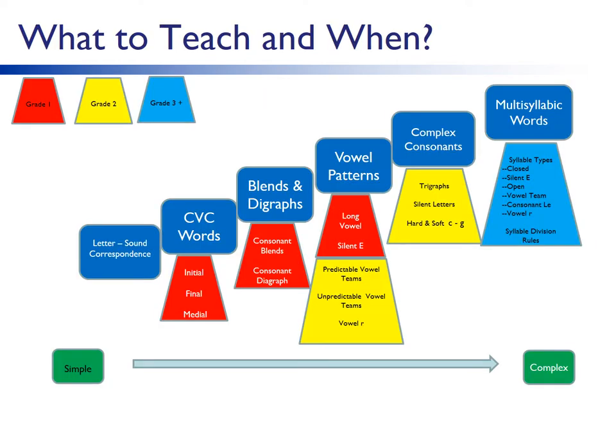What skills do we need to teach and when? There are foundational skills necessary for becoming a fluent reader. Each skill should be introduced explicitly at the grade levels indicated. For example, in first grade, consonant-vowel-consonant (CVC) words should be taught. Emphasis should be on initial, final, and medial sounds, consonant blends, consonant digraphs, and long vowel patterns including rules for silent E. The skills become more complex at each grade level.